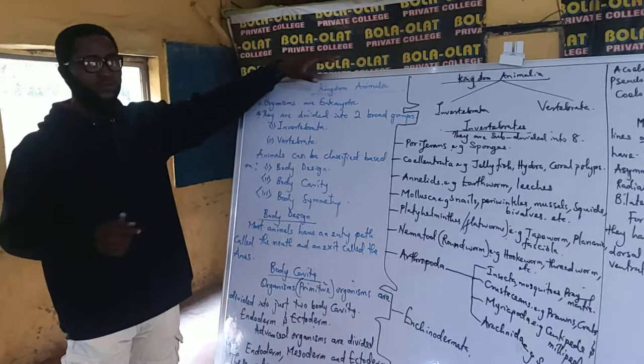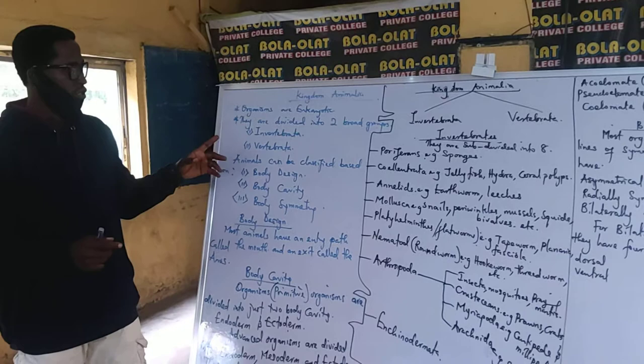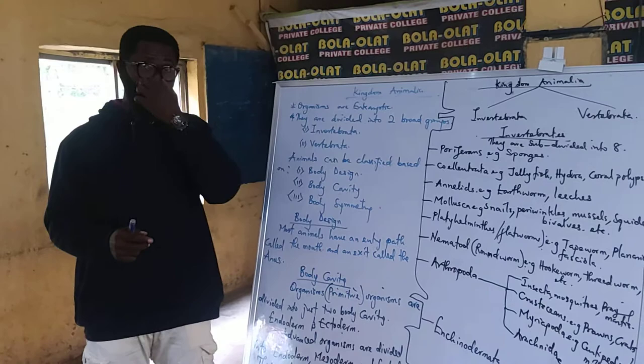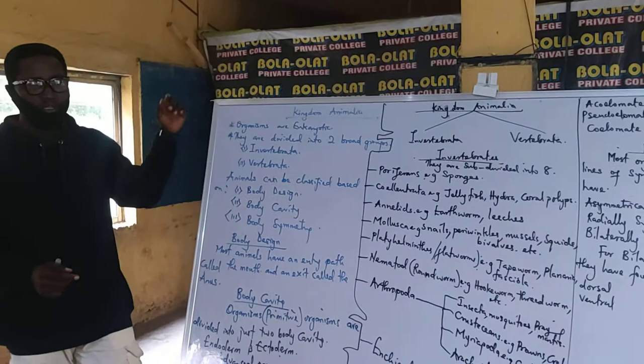This is the last kingdom we are covering — the kingdom of Animalia, which is our last kingdom under the classification. We know that all animals are covered here. They are divided into two broad groups: you have the invertebrates and the vertebrates.